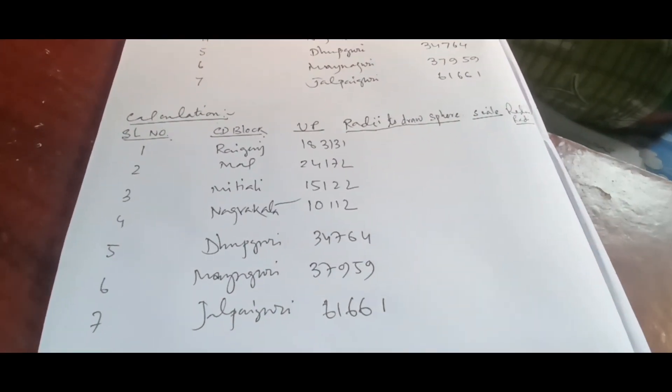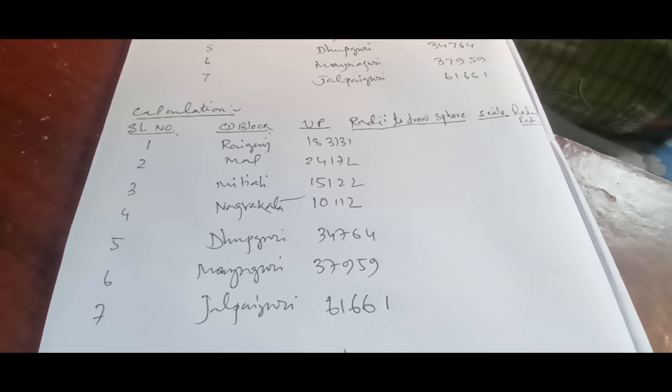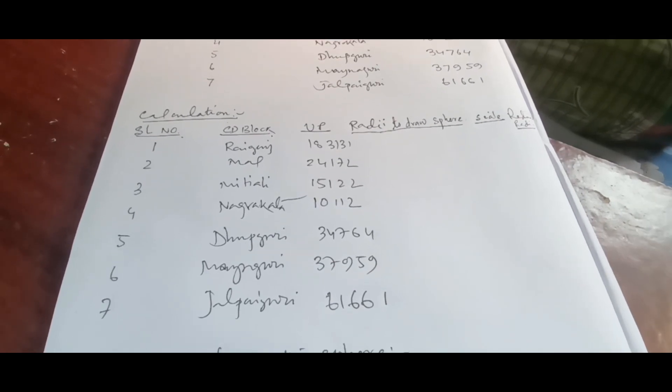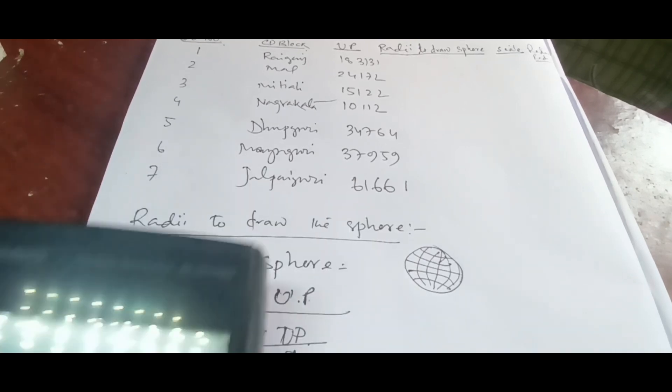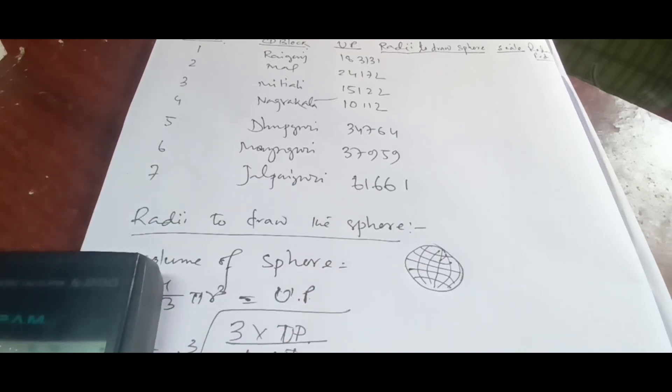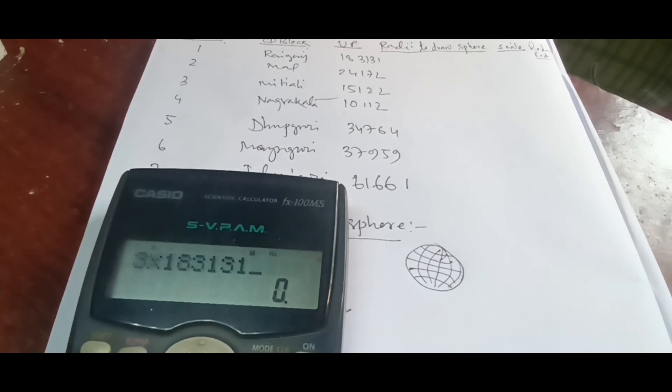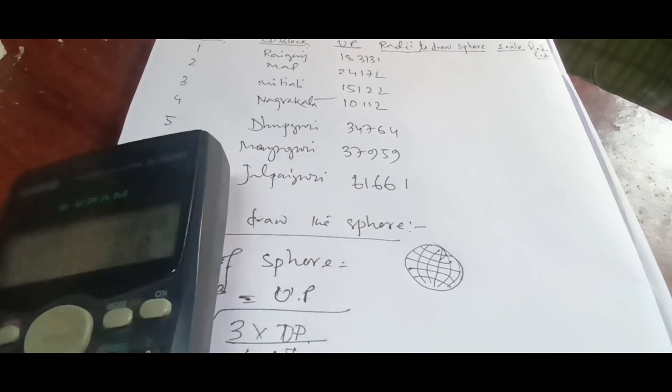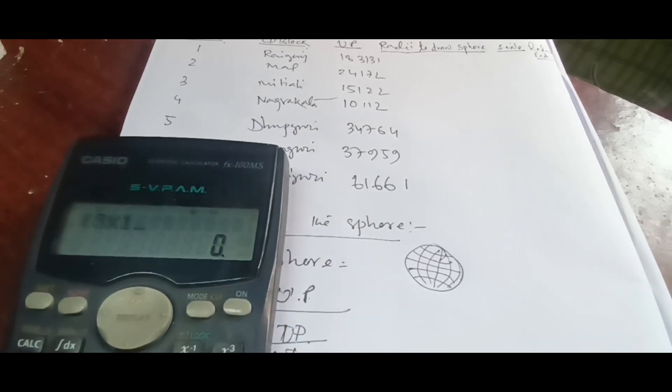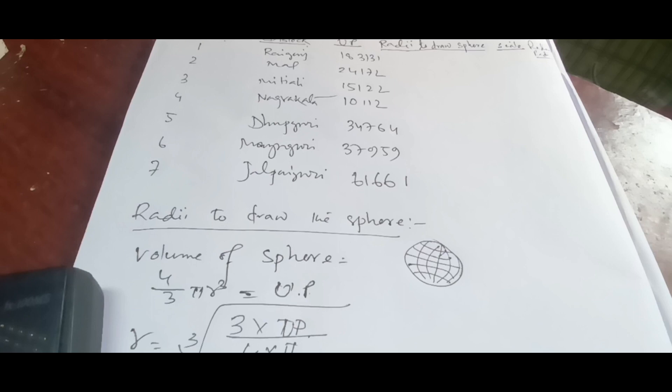According to the formula we need this population. Population of Raiganj is 183,131. So we have to put it. In this case according to the formula we have to put here 3 multiplied by - see the formula - it should be the population, that is 183,131. It should be in brackets also, so first bracket. After that we'll be putting 3 into the population 183,131, close the bracket and divided by 4 into pi.